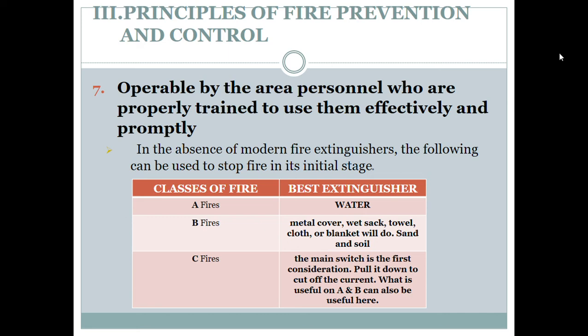In the absence of modern fire extinguishers, the following can be used to stop fire in its initial stage: for Class A fires, water is the best extinguisher. For Class B fires, a metal cover, wet sock, towel, cloth, or blanket will do, as well as sand and oil. For Class C fires, the main switch is the first consideration — pull it down to cut off the current — and Class A and B extinguishers can also be useful after the power is off.